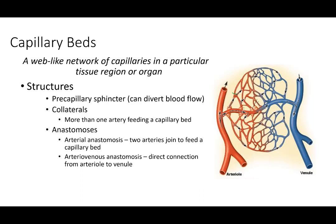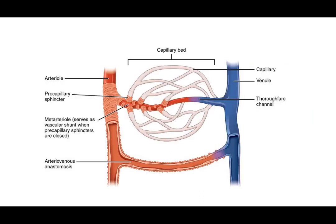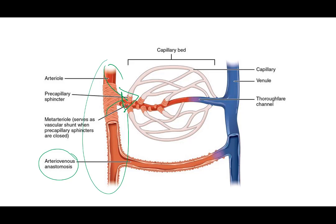An anastomosis is a direct connection from the arterial side straight across to the venous side, bypassing the capillary bed entirely. Arteriovenous anastomoses generally serve as an overflow — if too much flow is going through a capillary bed, it allows excess blood to bypass it and prevent any blowout or rupturing. Anastomoses can also form in a pathological sense.